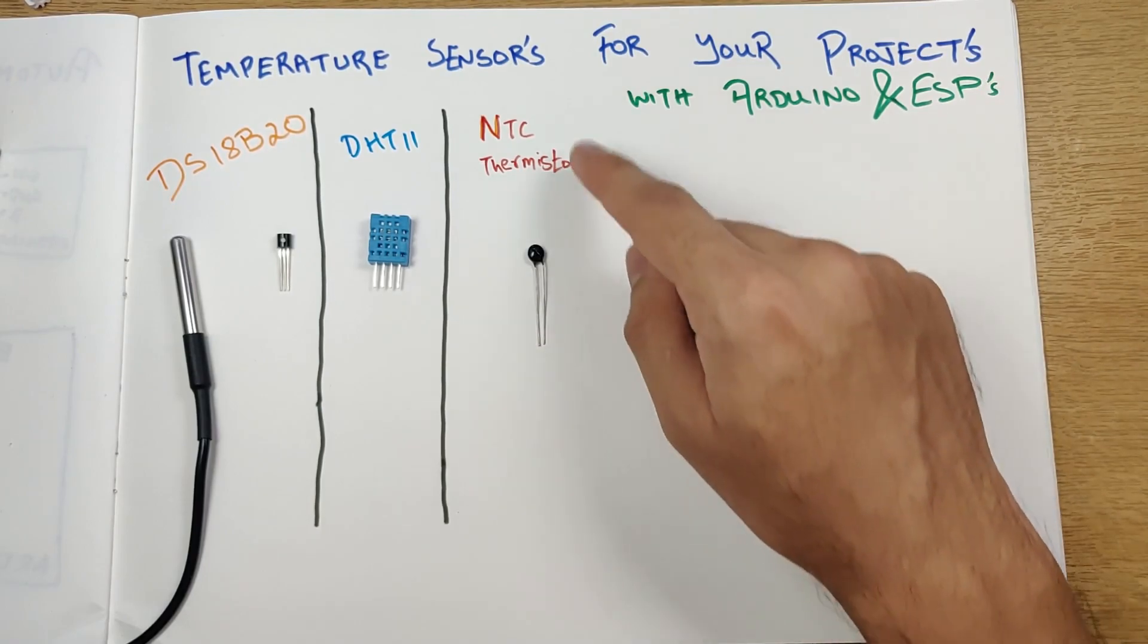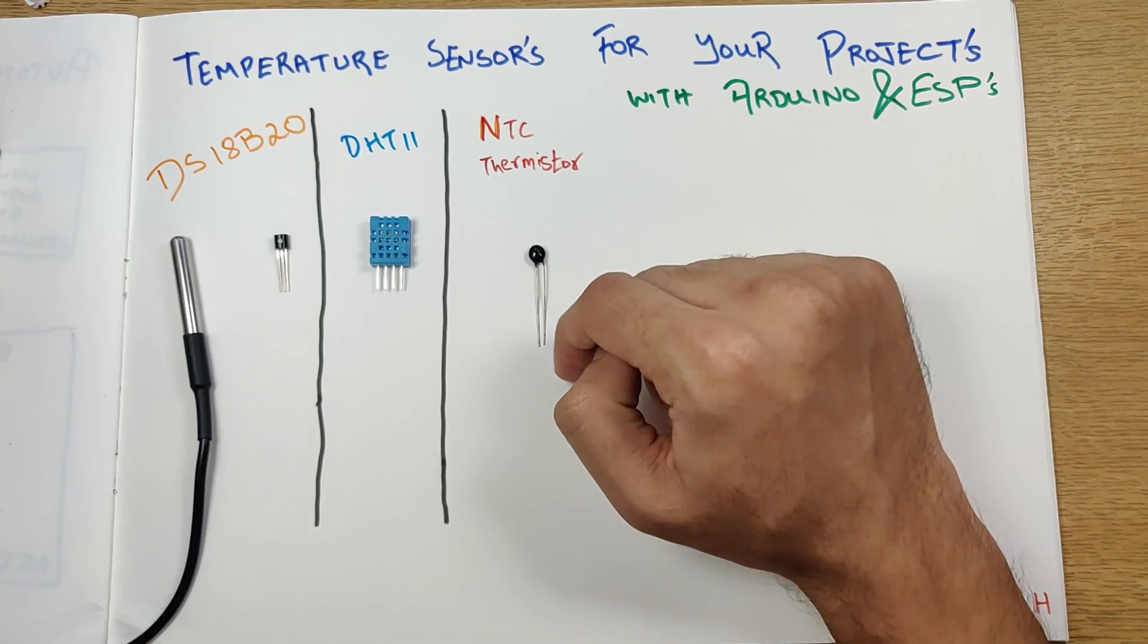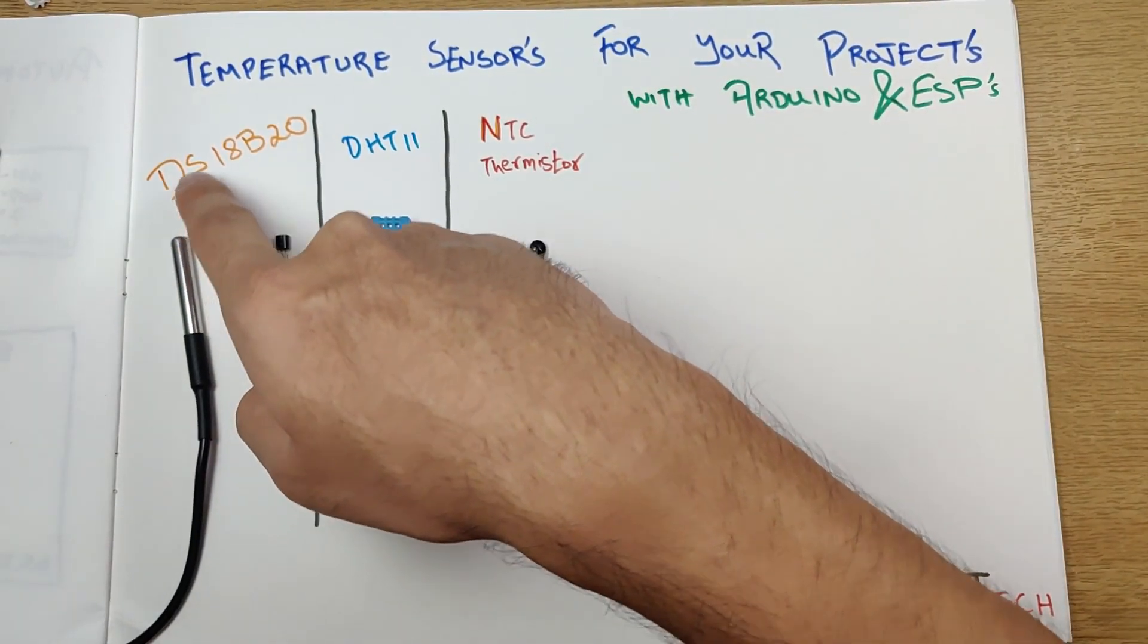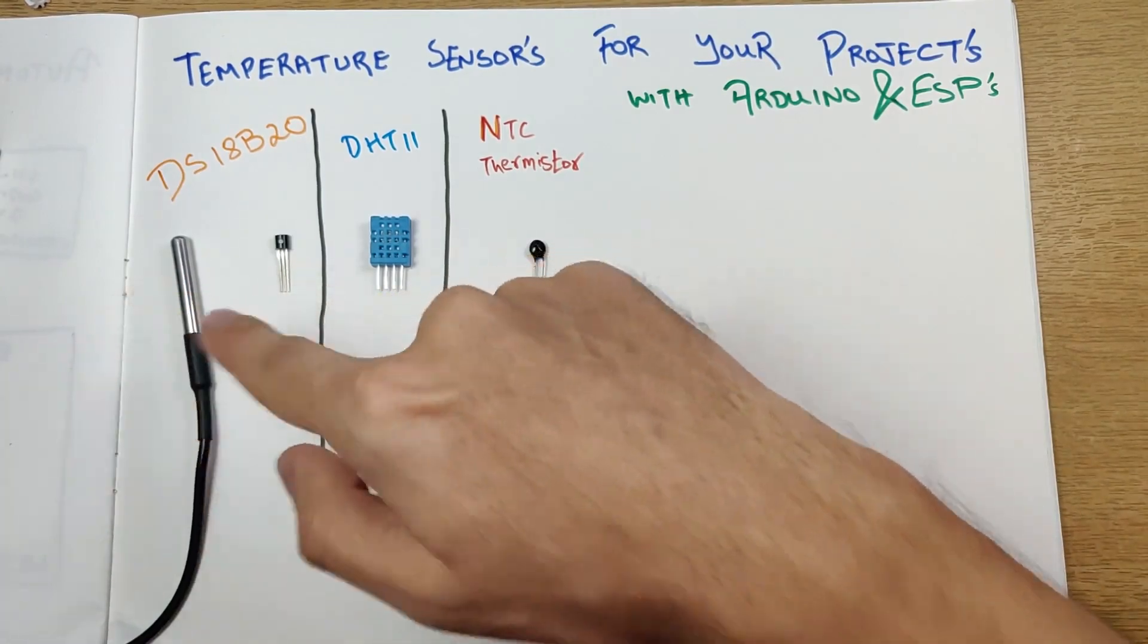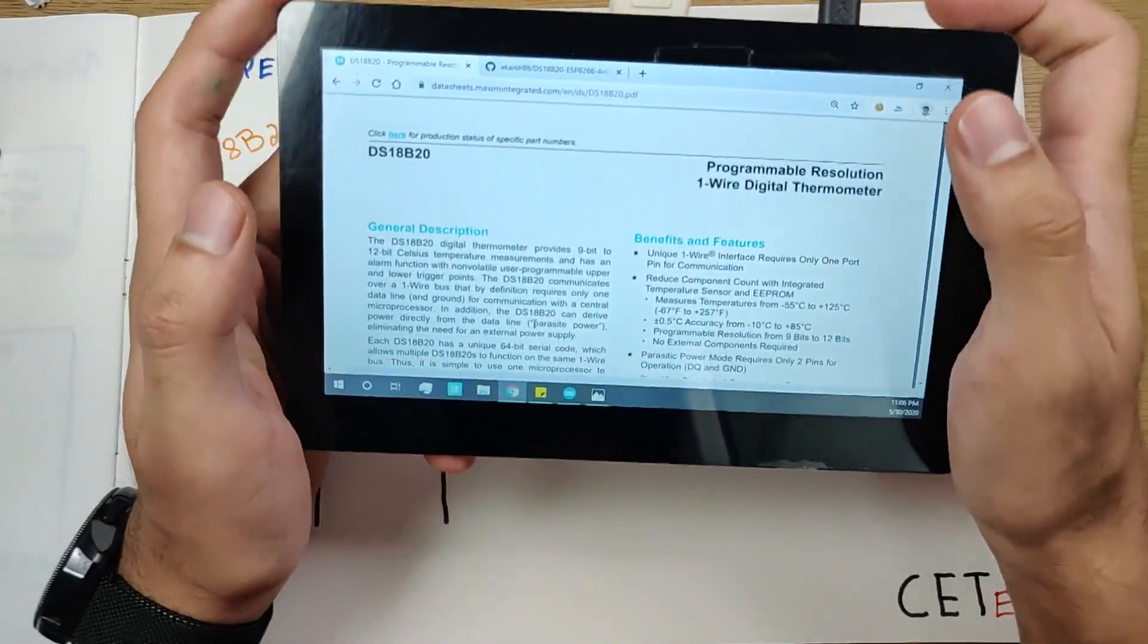We are also pretty much familiar about the NTC thermistor, about which I'll be doing a video very soon. But today we'll be focusing on the DS18B20. That is why we have two different types of packages for that as well. But before going over there, let's look at the datasheet of the DS18B20.